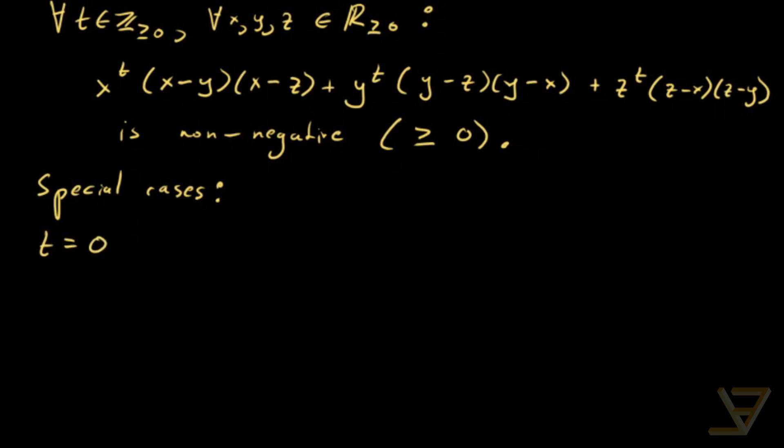The first one is for t equals zero. If you expand it out, what you get is that x² + y² + z² ≥ xy + yz + zx.